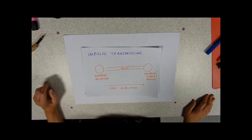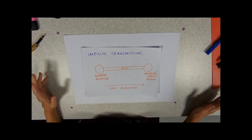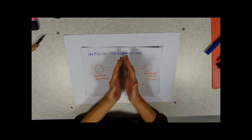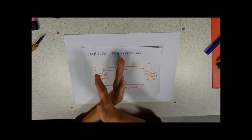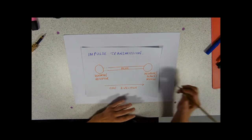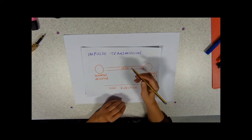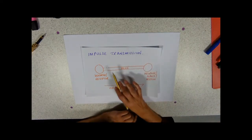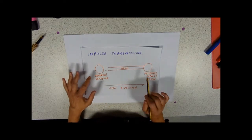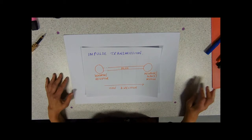This video is about nerve impulse transmission. We've looked at it happening as it goes past, with a little oscilloscope measuring the potential difference. Now we're going to look at how the impulse gets from one place to another, which is called impulse transmission.